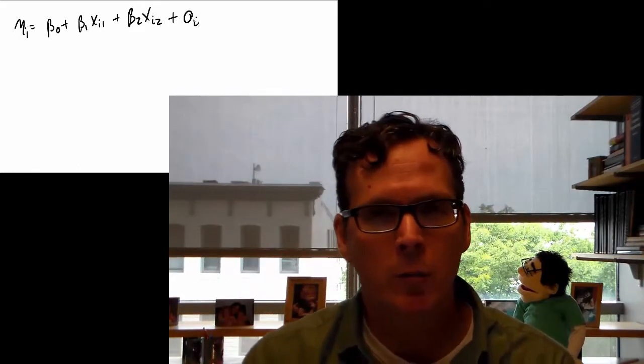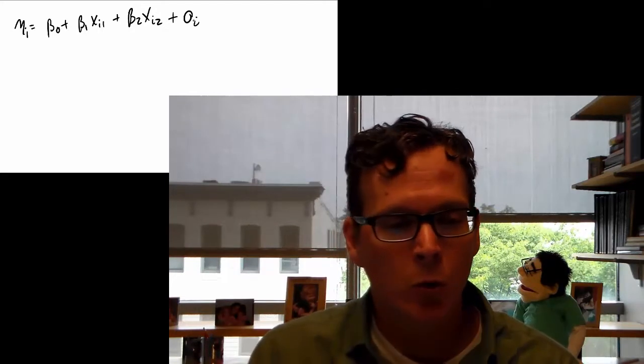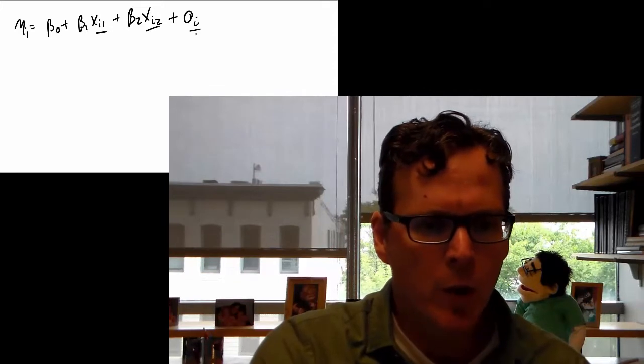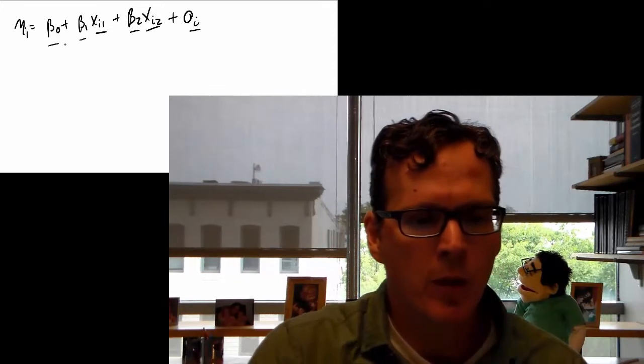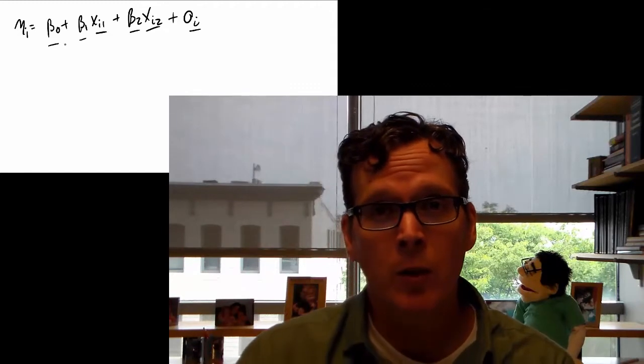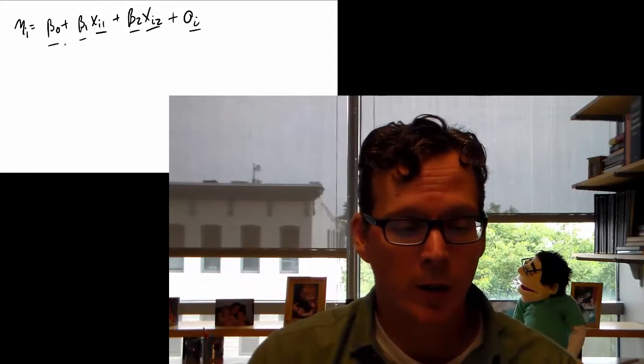This is usually called the linear predictor. It might have 50 predictors in it, it might have two. These things are all things we know. The parameters beta naught, beta 1, beta 2 are things we don't know and would like to know, and they're the things that relate our predictors to our outcome. But we haven't related this to our outcome yet.